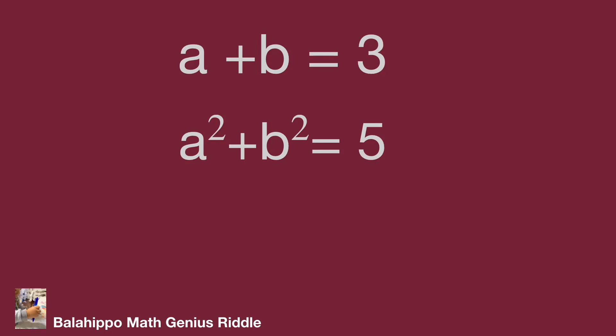Another given equation is a squared plus b squared equal to 5. If we want to get the value of a power of 4 plus b power of 4, or a power of 8 plus b power of 8, we may need to know the value of a times b. Therefore, we can utilize the formula of quantity a plus b squared. So, to get the value for a times b, we square both sides of the equation from a plus b equal to 3.